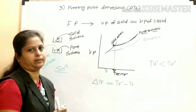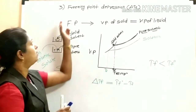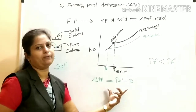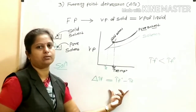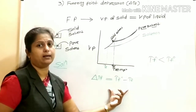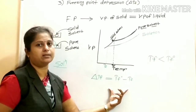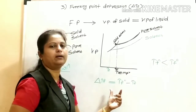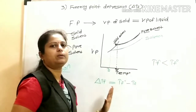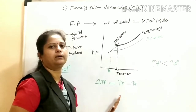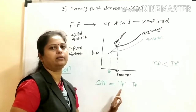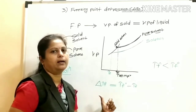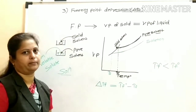Depression in freezing point, Delta Tf, is the difference between the freezing point of the pure solvent and the freezing point of the solution. This difference is called the depression in freezing point.